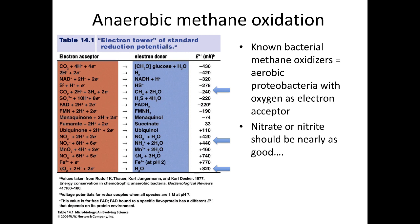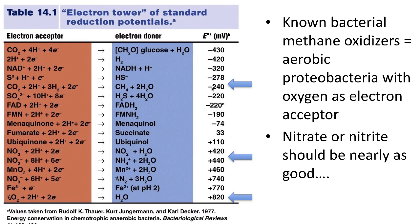That's aerobic methane oxidation, but there's also anaerobic methane oxidation. If you look at the electron tower and look at methanol oxidation to CO2, you see it has a very high electron potential. Since we're adding electrons and making methane, it has a negative electron potential. It can donate to oxygen for lots of energy, but it can also donate to nitrate or nitrite, and you get lots of energy from this.